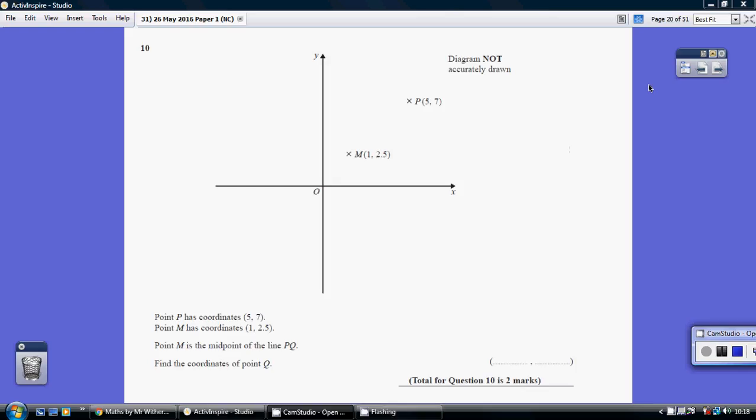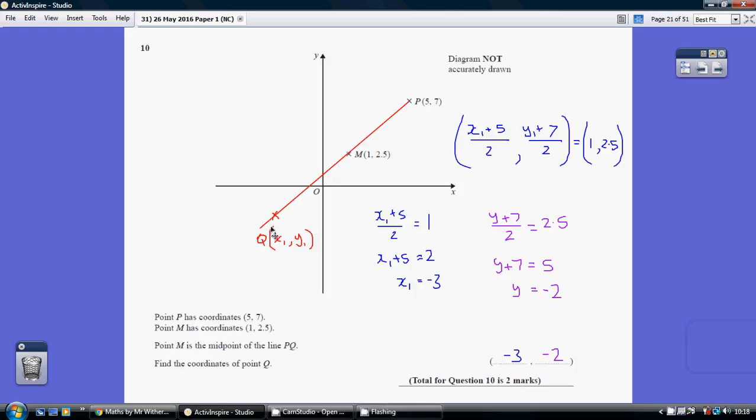Question 10. Now, this is slightly tricky because it's not the usual way around. What normally happens is we're given the two endpoints, say P and Q, and we work out the midpoint by averaging the x-coordinates and averaging the y-coordinates. On this occasion, we've got to work the other way around. So, I've got my hypothetical point Q here, where I'm calling the x-coordinate x1 and the y-coordinate y1.